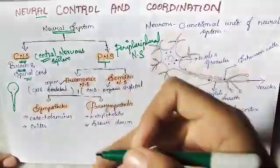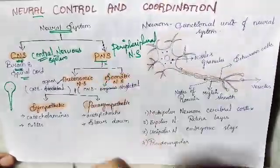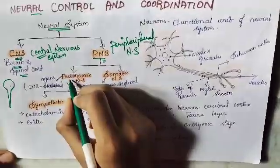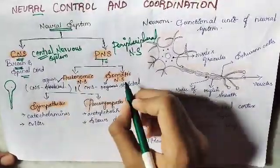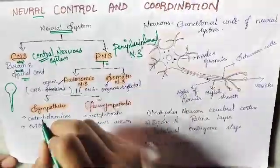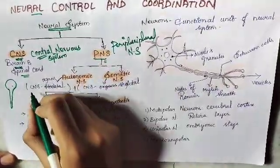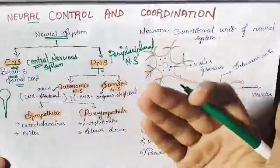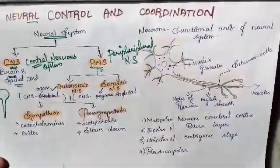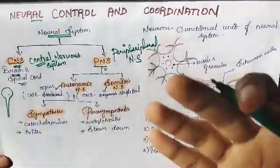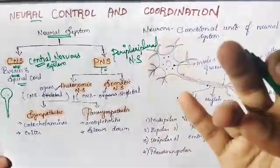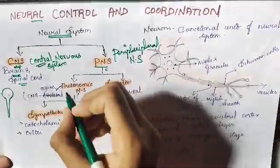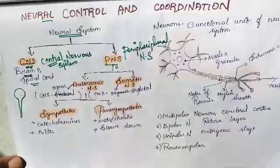The peripheral nervous system comprises neurons. The peripheral nervous system is divided into the autonomic nervous system and the somatic nervous system. The autonomic nervous system takes information from the central nervous system to our visceral organs — that is the organs placed inside our body, like kidneys, heart, and stomach. So the organs placed inside our body are controlled by the autonomic nervous system.